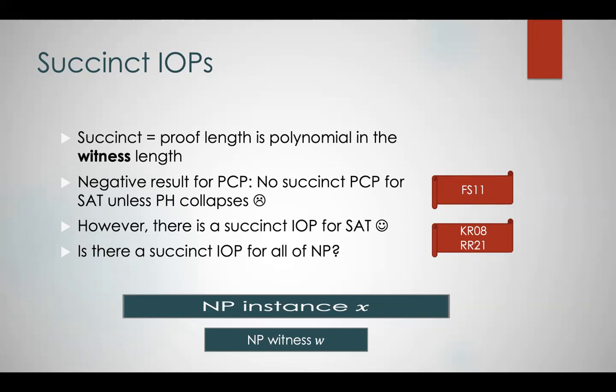Now let's go back to the succinct IOP for SAT. Does that imply there is a succinct IOP for all of NP? After all, SAT is an NP-complete relation. However, this is not the case, because reductions from NP relations to SAT do not necessarily preserve the witness length. So the question of whether there exists a succinct IOP for all of NP remains open.